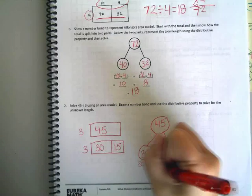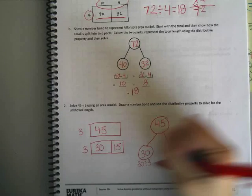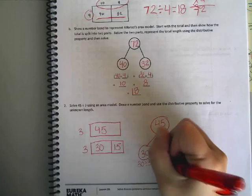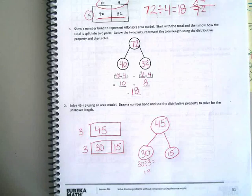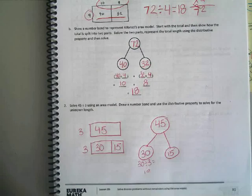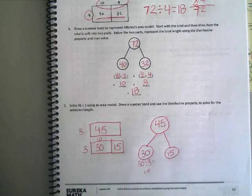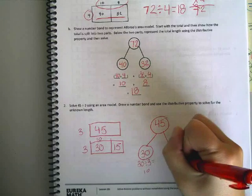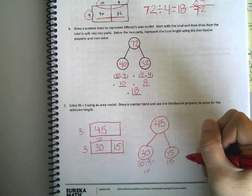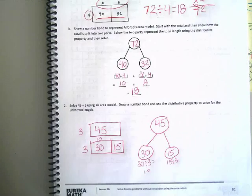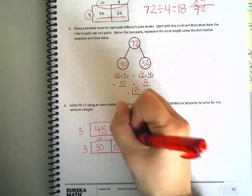All right. And we have to do 30 divided by? 3. Which gives us what? 10. So we know that this part up here is what? What is this part of our length? 10. And then we have to do 15 and divide that by? 3. We're dividing all of them by this number. And what's 15 divided by 3? 5. So we know that goes right here.